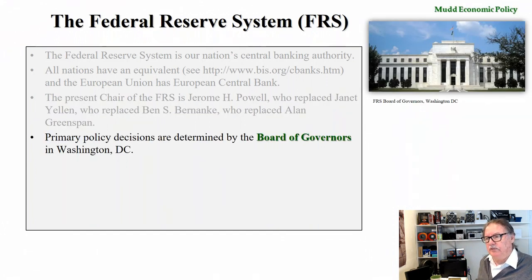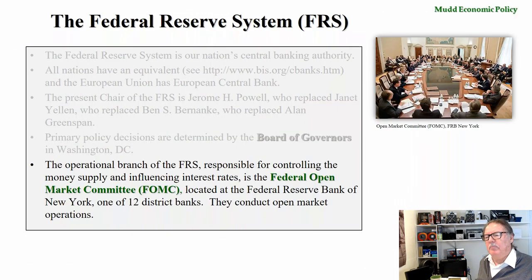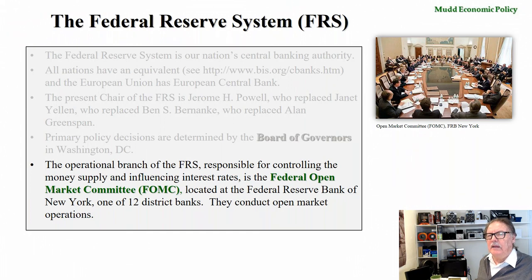Primary policy decisions are determined by the Board of Governors in Washington, D.C. When you hear news about ambitious new policies to support the commercial paper markets or the repo market, those primary decisions come from the Board of Governors and are voted on by them. We're going to mostly focus on the operational branch — the Federal Open Market Committee, or FOMC — which is responsible for controlling the money supply and influencing interest rates.